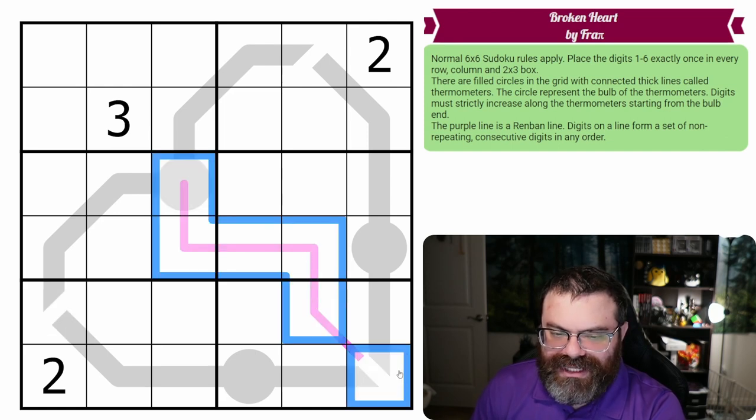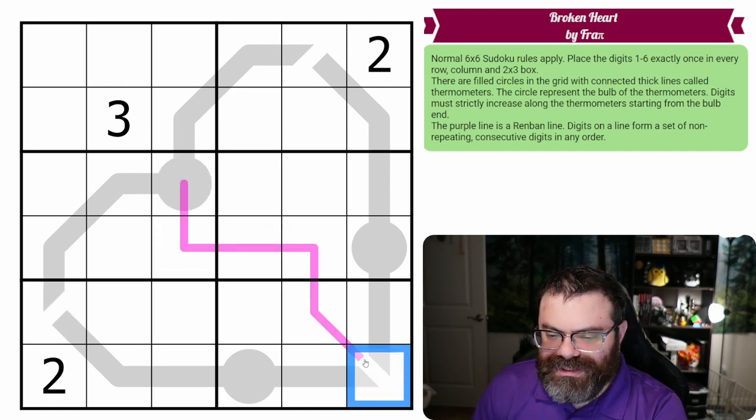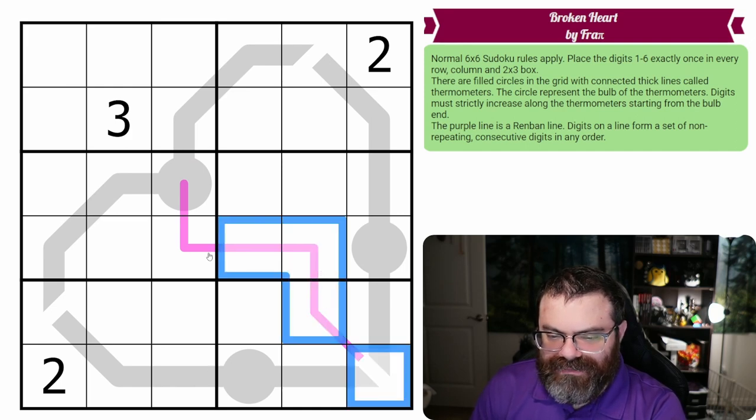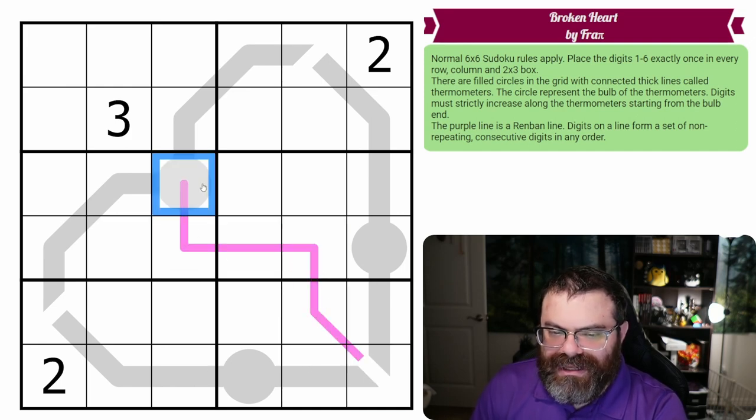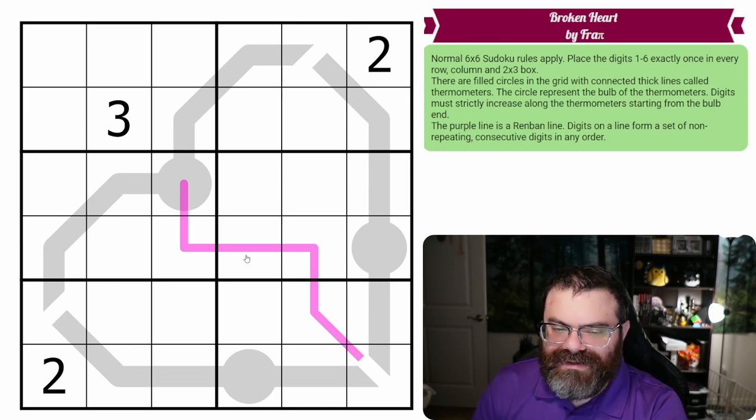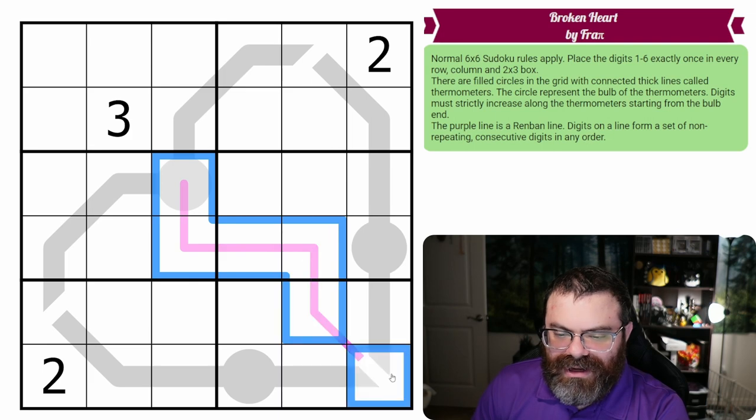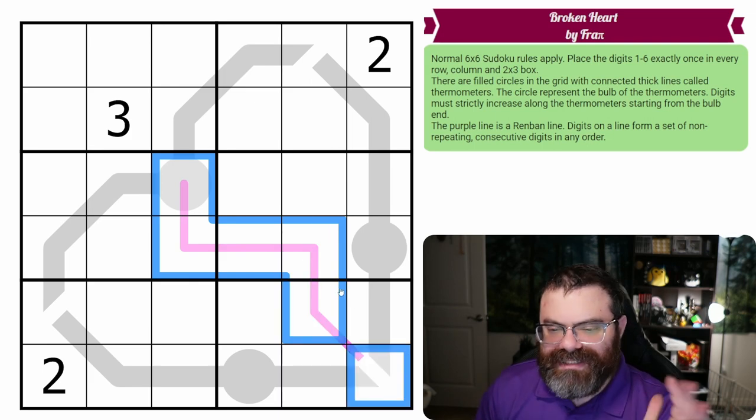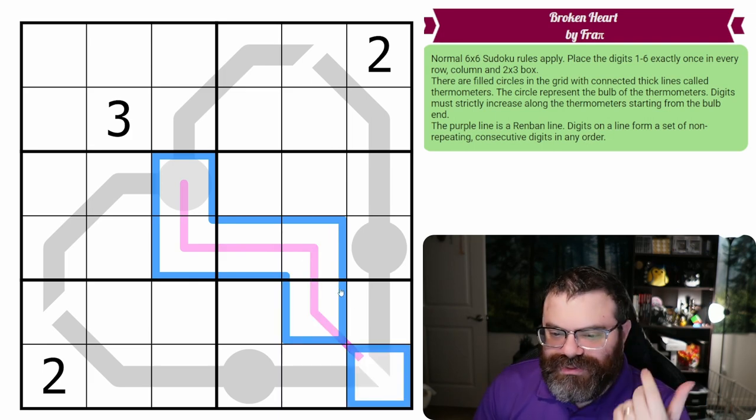And then this is the other constraint, this is a Renban line. It also enters this cell, so it occupies all of these cells, all six of them. A Renban means digits form a set of non-repeating consecutive digits in any order. So on this Renban, we need to put a consecutive set of digits that do not repeat.